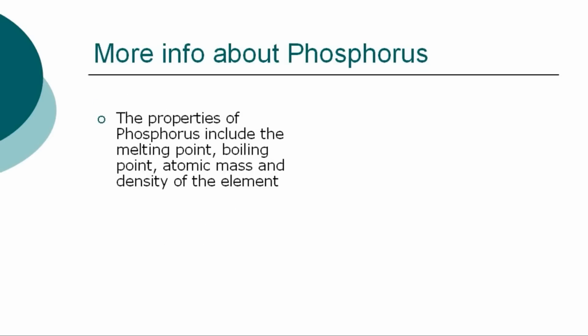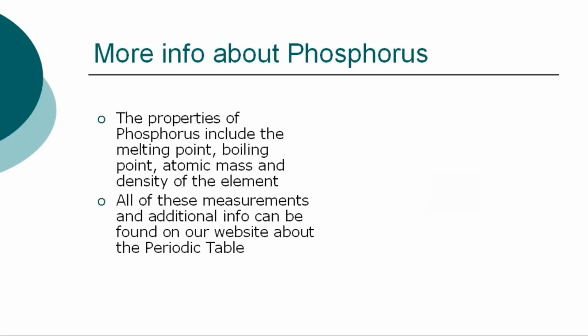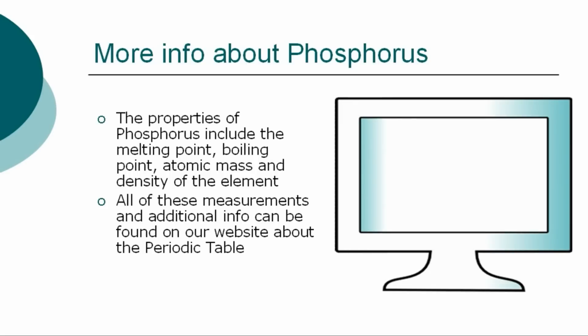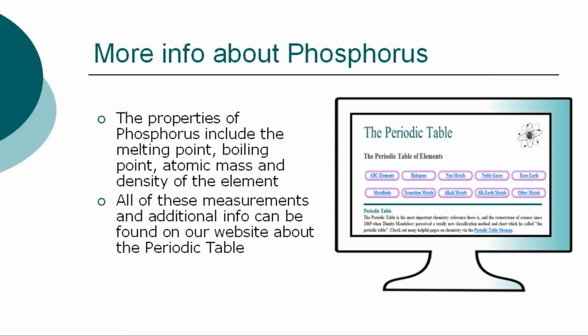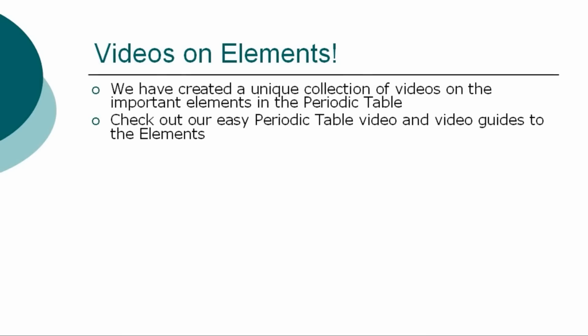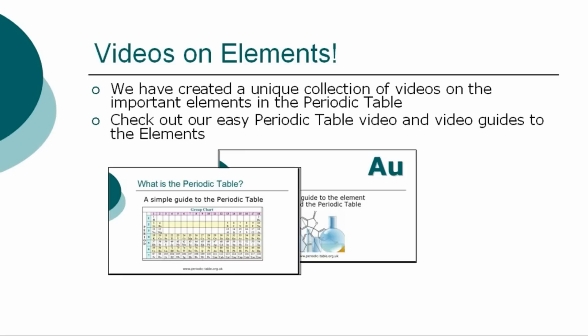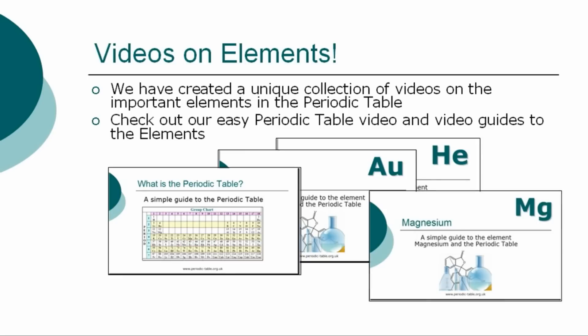The properties of phosphorus are classified by many other factors, including the melting point, boiling point, atomic mass, and density of the element. All of these precise measurements, together with additional facts and information, can be found on our website. So ends our simple guide to the element phosphorus. Check out our other easy video guides to the elements via our website.